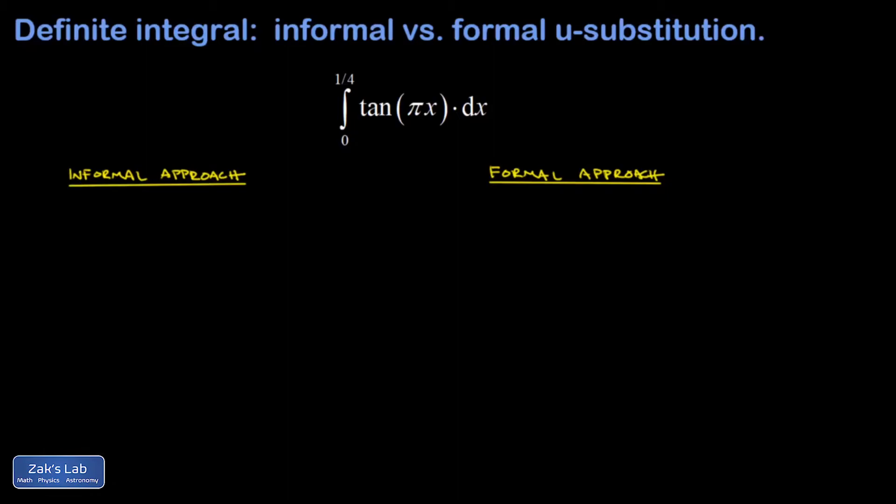The essence of the informal approach is: can I recognize the chain rule backwards and guess the anti-derivative? In the formal approach we'll be making formal u-substitutions.